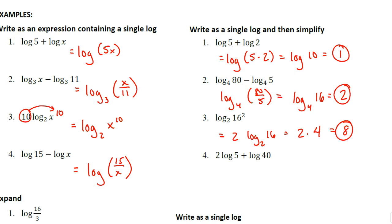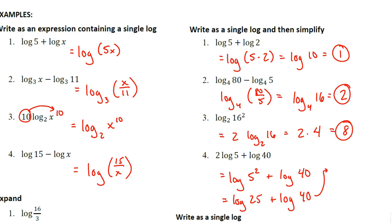Why don't you see if you can try this next one, combining what we've already talked about? This one's going to take a few more steps — pause the video if you're ready. For the first step, take that 2 and put it as an exponent for the 5, giving log of 5 squared plus log of 40, or log of 25 plus log of 40. Using the product rule, that becomes log of 25 times 40, which is log of 1000. Since it's a common log, 10 cubed equals 1000, so the answer is 3.